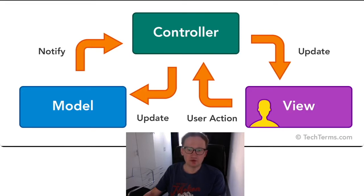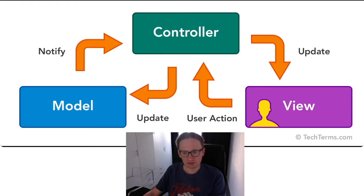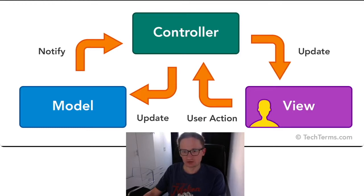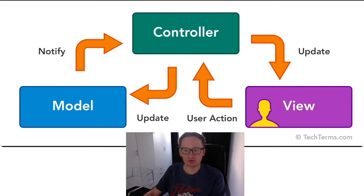View is a user interface for displaying the contents of the system state and for entering information from the user. View components do not know anything about what they will display and how the information received from the user will be processed.